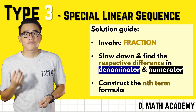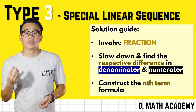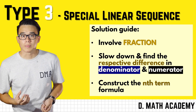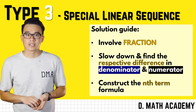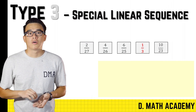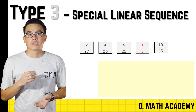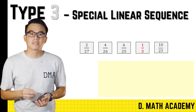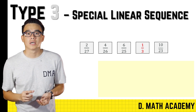For the first type, the example usually involves fractions where the differences vary across the numerator and denominator. We combine all this information to construct the n-term. Our question here goes: 2 over 27, followed by 4 over 26, and 6 over 25. As you can see, the term-by-term differences vary across the numerator and denominator.